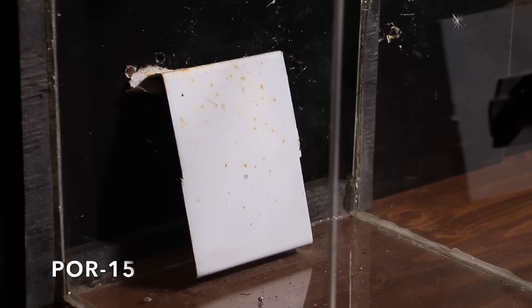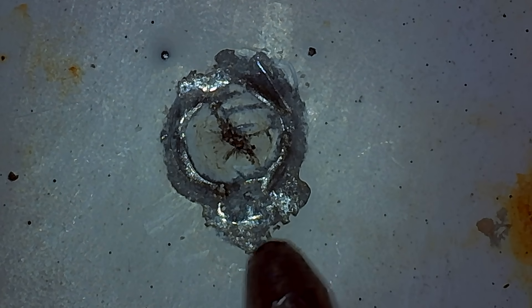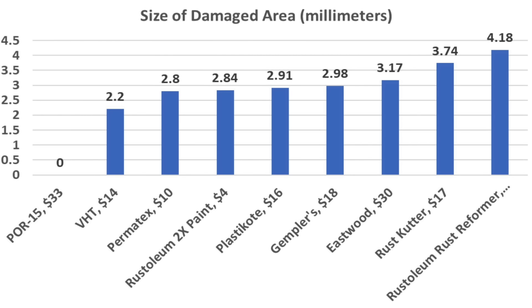While the Rust-Oleum topcoat did chip, the POR-15 underneath the paint did not chip and there's no exposed metal. Very impressive! So the POR-15 came in on top without experiencing any metal exposure beneath the impact area. VHT finished second at 2.2 millimeters, Permatex 2.8, Rust-Oleum 2X 2.84, and Plastic Coat 2.91 millimeters.